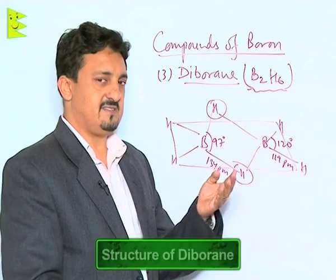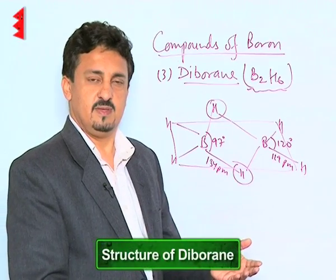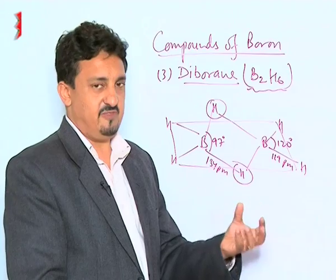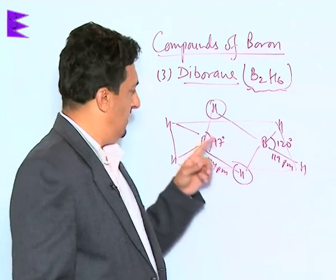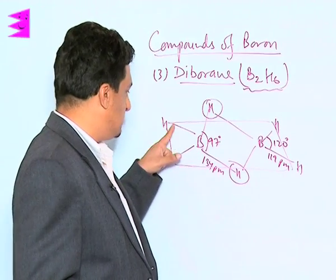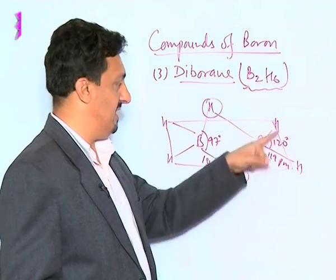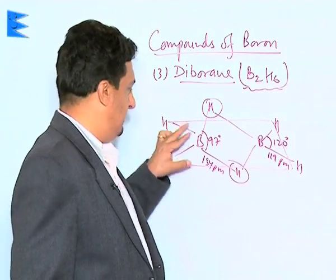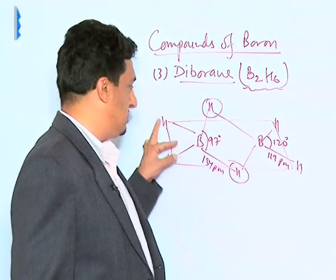Now let us see the structure of diborane. In diborane, both these borons are sp3 hybridized. Each boron has three electrons. Two are being shared with two hydrogen atoms, and they are in the same plane—the boron and the two hydrogens.